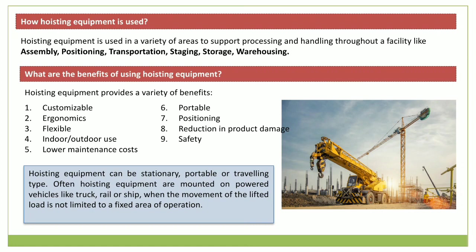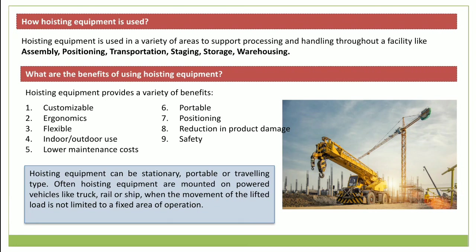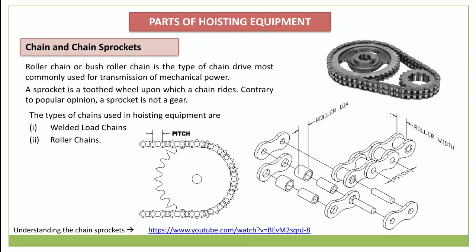Most hoisting equipment utilizes common types of parts like chain, wire rope, chain or rope drums, pulleys, and lifting attachments like hooks and grabs. I will discuss these parts briefly in this video and in upcoming videos. However, parts used in elevators are different and will be discussed under the elevator section. Specific parts associated with individual equipment will also be discussed in subsequent videos.